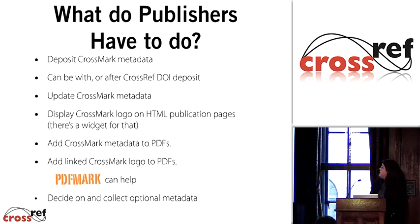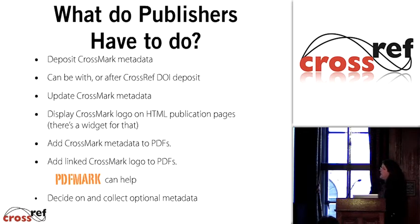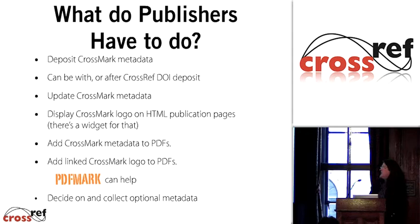Here's a laundry list of things publishers would have to do. They would have to deposit Crossref metadata — and that could happen either with their DOI deposit or afterwards. The intention is to modify the schema so that it's one deposit, not two separate deposits for Crossmark and Crossref. Keep that metadata updated as mentioned. Display the Crossmark logo on your HTML publication pages — there's a widget for that. Add Crossmark metadata to PDFs — there's a tool for that — and add linked Crossmark logos to PDFs using a PDF mark tool. It would not be required to attach Crossmarks to all of your backfiles, although it would be recommended; it would just be current information you'd be asked to deposit.